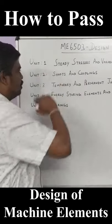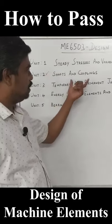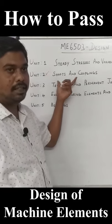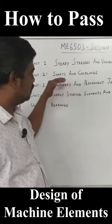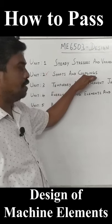Unit 2 is very, very important because there is a chance for Part C — either Shorts or Uncouplings.